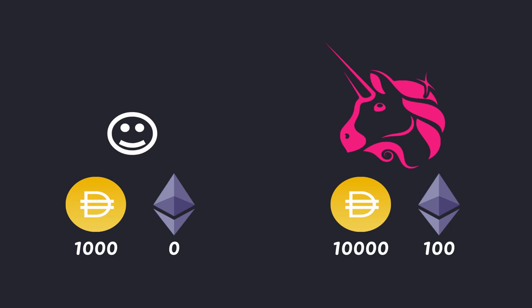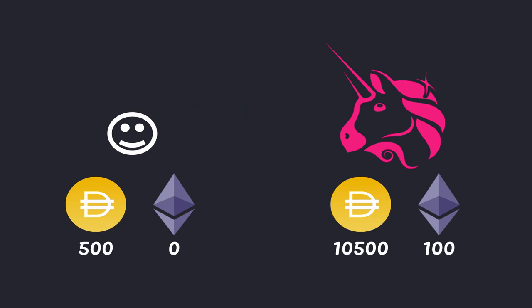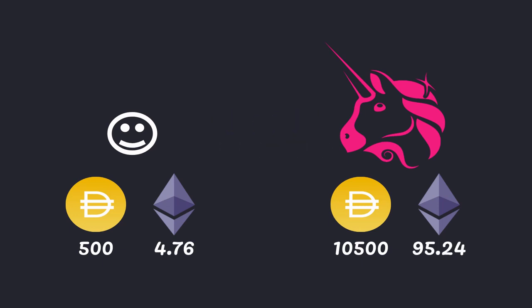I have 1000 DAI and 0 ETH and I want to become a liquidity provider on Uniswap. So I'm going to sell half of the DAI that I have and get some ETH in return. Once I have both tokens I'm going to put them into Uniswap and become a liquidity provider.